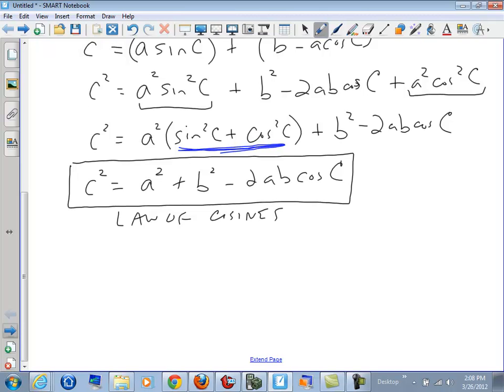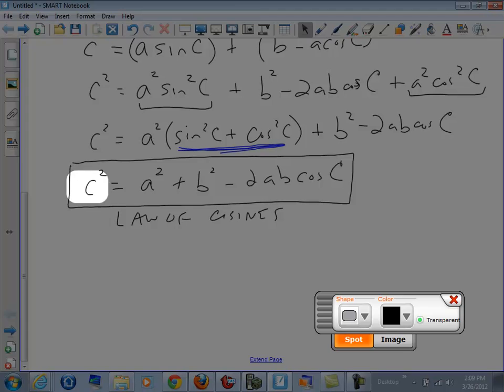And it turns out it looks very similar to Pythagorean theorem. So here we have c squared equals a squared plus b squared. So like that, it looks like the Pythagorean theorem, but we have this extra term as well, minus 2ab cosine C.